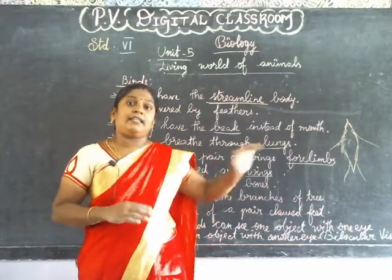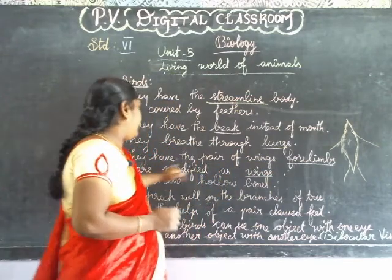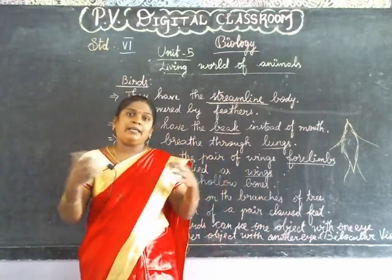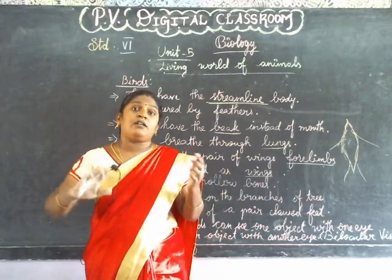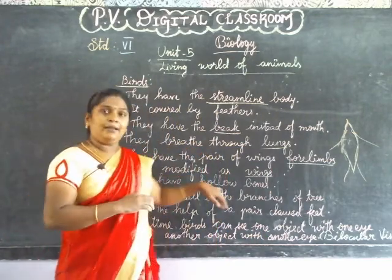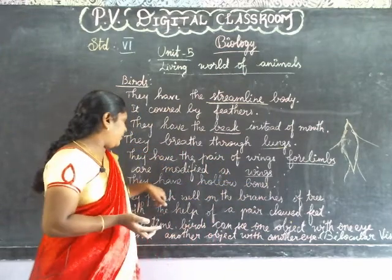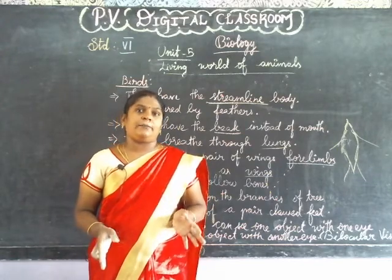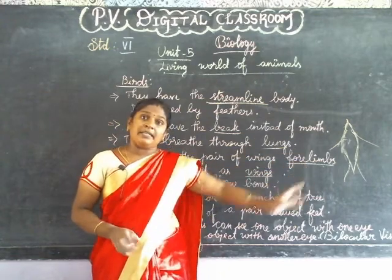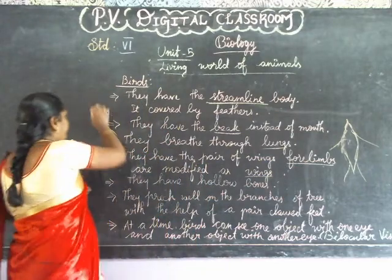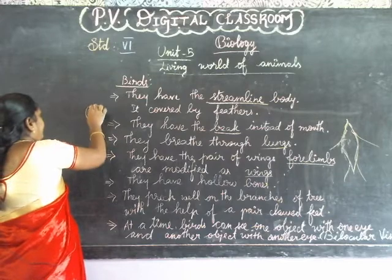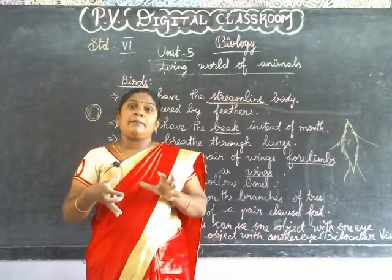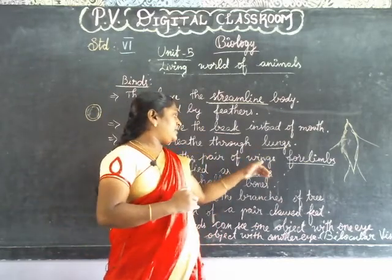The four limbs are modified as wings — this is the arm region. The wings allow the bird to fly in the air. Birds have hollow bones — when we cut the bones, the hollow region is filled by air. This lightens the body, which is important for flight. This is a special adapting character.